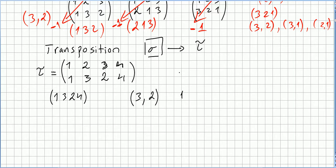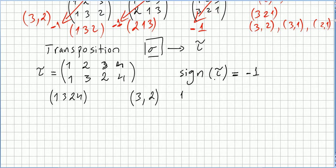Only one inversion — an odd number — so the sign of this transposition is minus 1. There is an easy proof for this: the sign of any transposition is always minus 1, because any transposition will always have an odd number of inversions.